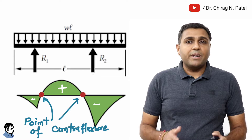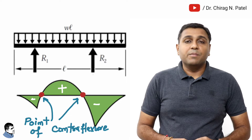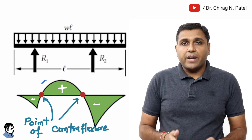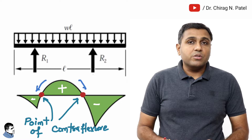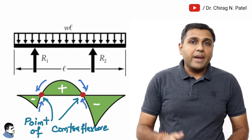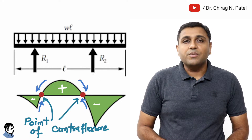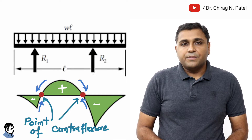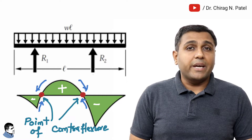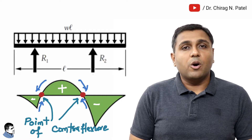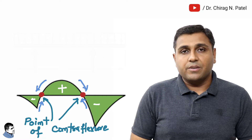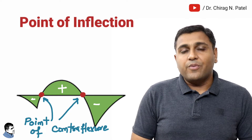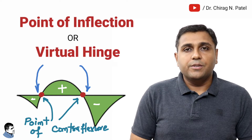In other words, on the bending moment diagram, the point at which the bending moment changes its sign from positive to negative or negative to positive is called the point of contra flexure. It is a point where the beam tends to bend in the opposite direction, and it is also known as the point of inflection or virtual hinge.